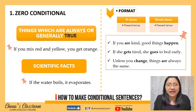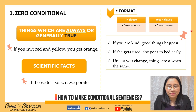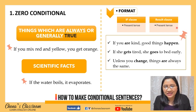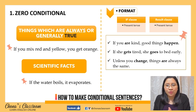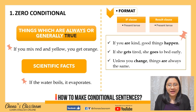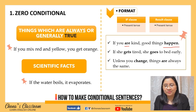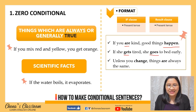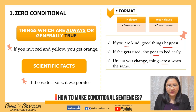The format of the zero conditional uses the present tense in the if clause and another present tense in the result clause. For example: 'If you are kind, good things happen' — 'are' and 'happen' are both in the present form. Another example: 'If she gets tired, she goes to bed early.' And another: 'Unless you change, things are always the same.' That is the zero conditional.